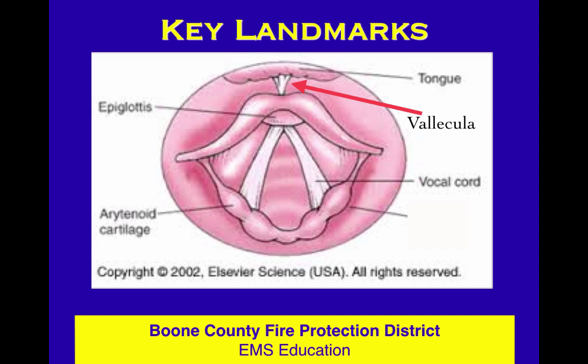The key landmarks we're looking for are the tongue and then the vallecula — that space at the base of the tongue where there is a ligament. When you press on that ligament you can manipulate the epiglottis, and the epiglottis will then move up and out of the way so you can actually see the vocal cords.